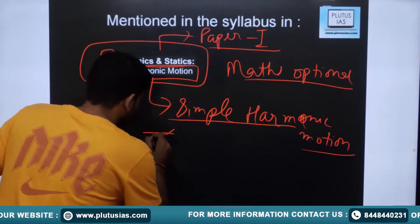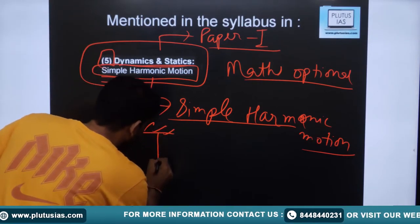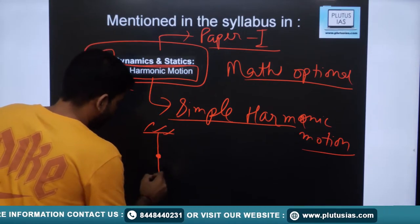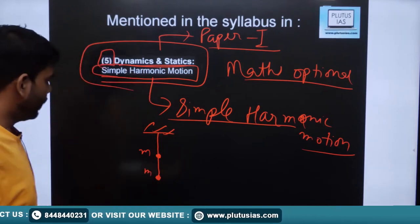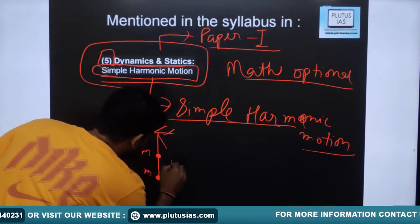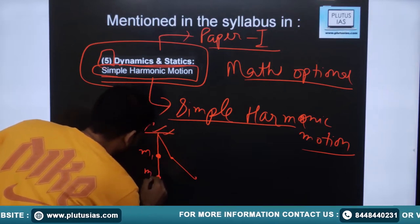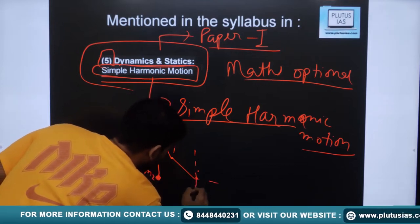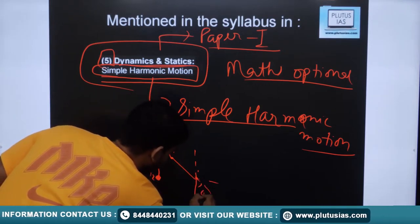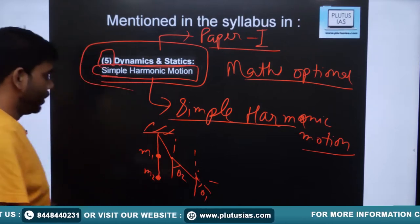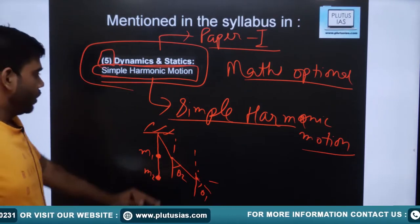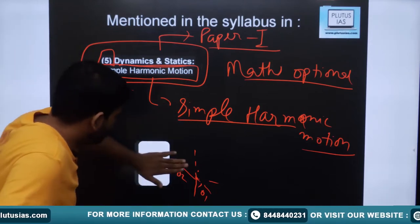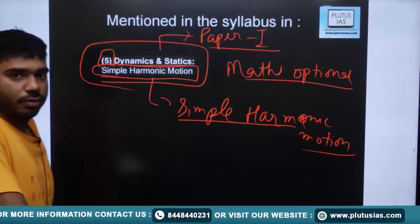There can be Harmonic Motions that engage degrees of freedom of two and above. For example, a two-mass pendulum will oscillate with two degrees of freedom — theta 1 and theta 2 as two independent variables. This is a complicated Harmonic Motion, not a Simple Harmonic Motion. In the syllabus, it is clearly mentioned we have to focus only on Simple Harmonic Motion.